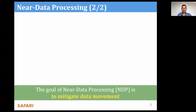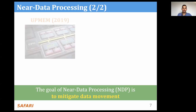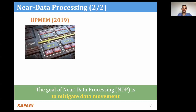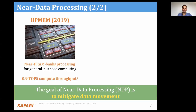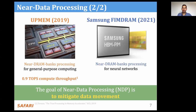The logic in an NDP architecture has access to DRAM with higher DRAM bandwidth and also shorter DRAM average memory access time. Therefore, the goal of near-data processing is to mitigate data movement bottlenecks in modern systems. Near-data processing is not a new idea — the first NDP architectures were proposed five decades ago. However, only recently has industry started to introduce new NDP architectures. I'm going to highlight two: the UPMEM architecture, which integrates near-DRAM-banks compute capabilities targeting general-purpose computing, providing a peak throughput of 0.9 TROP operations per second. Second, the Samsung HBM-PIM architecture, which integrates nearby DRAM banks compute capabilities targeted to accelerate neural networks, providing a peak throughput of 1.2 Teraflops per second.